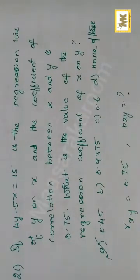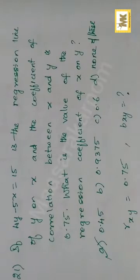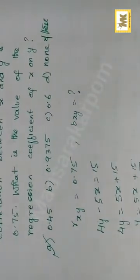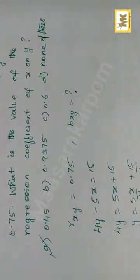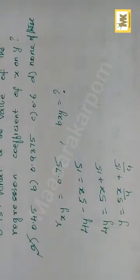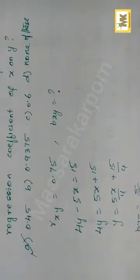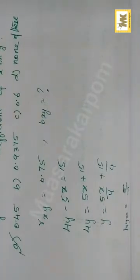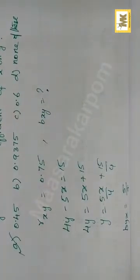From 4y minus 5x equals 15: 4y is equal to 5x plus 15, so y is equal to 5x by 4 plus 15 by 4. Therefore byx is equal to 5 by 4.